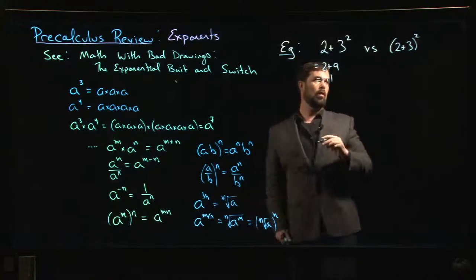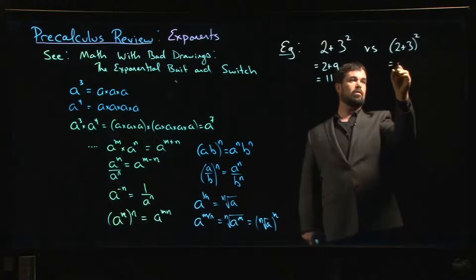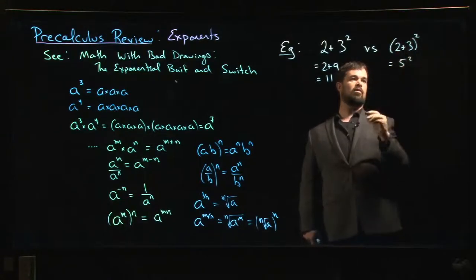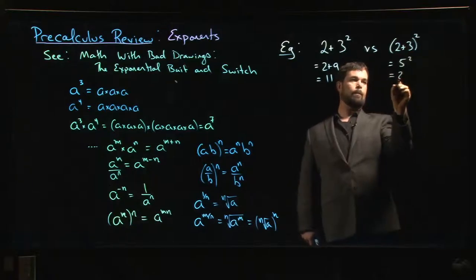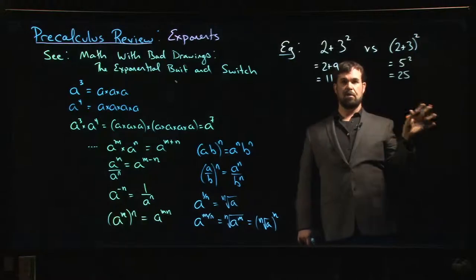Whereas here, the parentheses say I should really first do 2 + 3. I do the thing inside the bracket first, I do the 5, then I square it, I get 25.